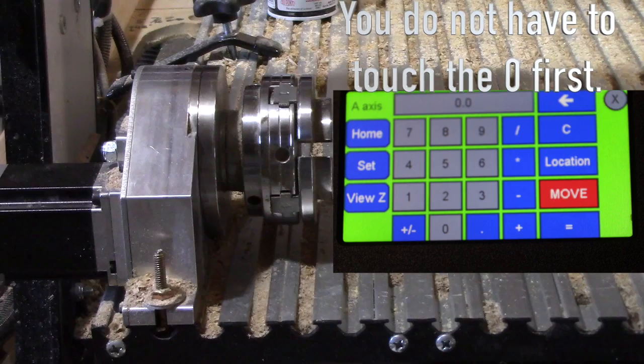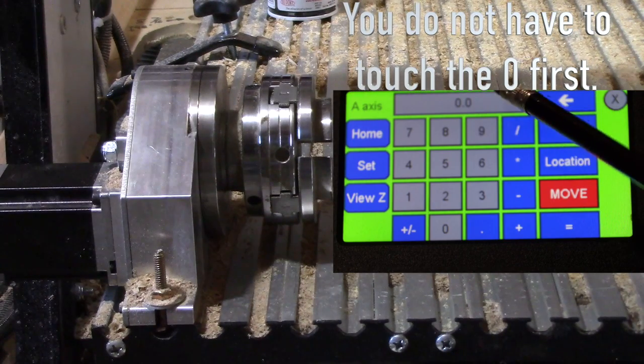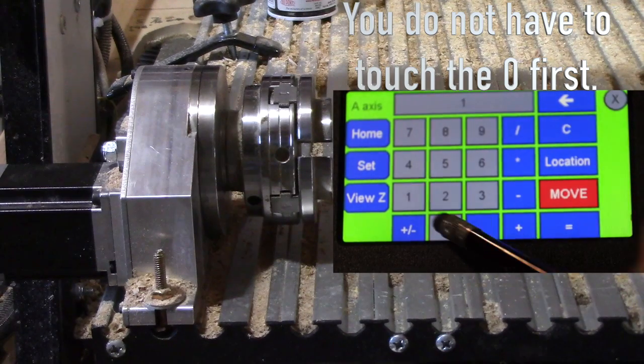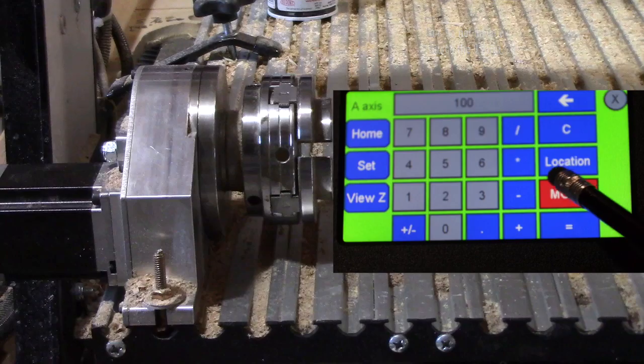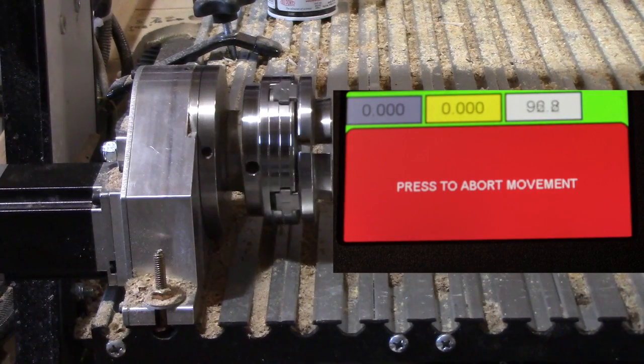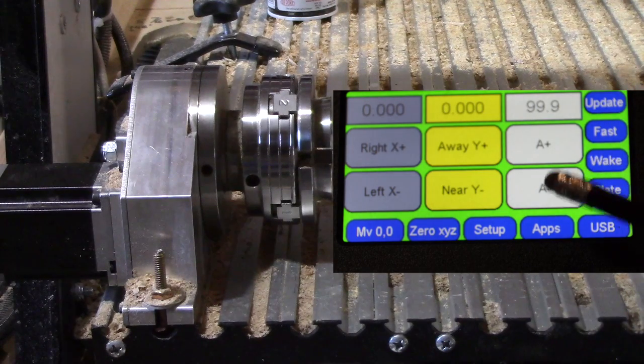A axis and your rotary axis are the same axes. So I can move that if I touch here and put 100 and say move, you'll see the axis is actually moving and when it's done moving it flips back to this screen.